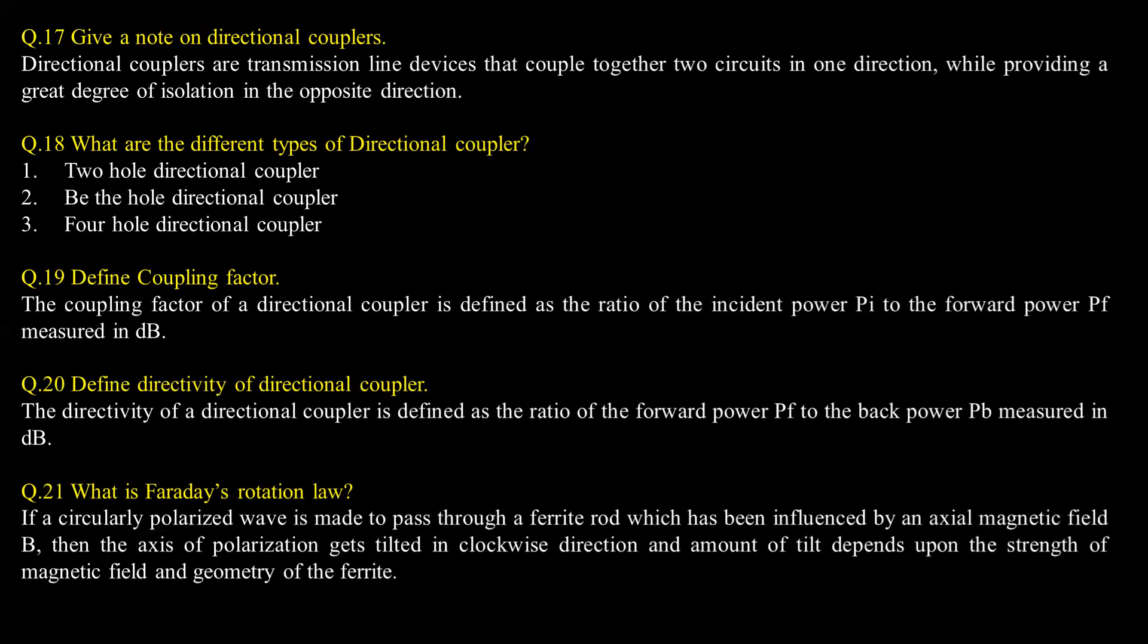Define coupling factor. The coupling factor of a directional coupler is defined as the ratio of the incident power Pi to the forward power Pf measured in dB. Define directivity of directional coupler. The directivity of a directional coupler is defined as the ratio of the forward power Pf to the backward power Pb measured in dB.